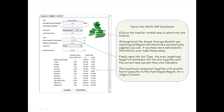Click on the familiar rainfall map to select the site location. Although both the annual average rainfall and hydrological region information are automatically supplied, you can, if you have more detailed site information, over-type these values.